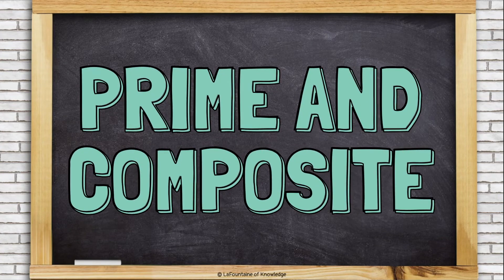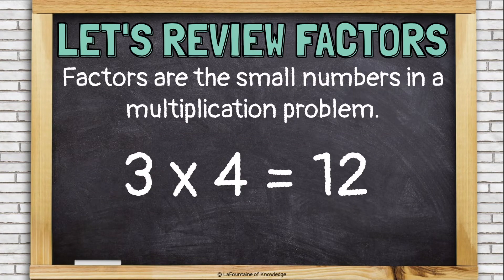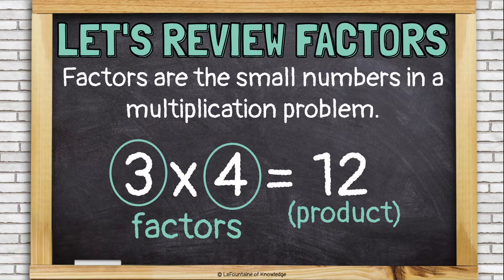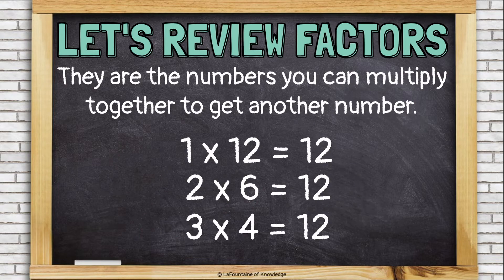Prime and composite. Let's review factors. Factors are the small numbers in a multiplication problem. In this problem, 3 and 4 are the factors. 12 is the product or the answer. They are the numbers you can multiply together to get another number.